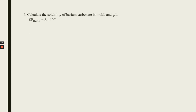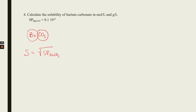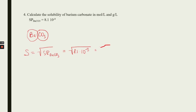We have barium carbonate — there is one cation and one anion, so solubility is calculated as the square root of the solubility product of barium carbonate. It equals the square root of 8.1 × 10⁻⁹, which is equal to 9 × 10⁻⁵ mol/L.